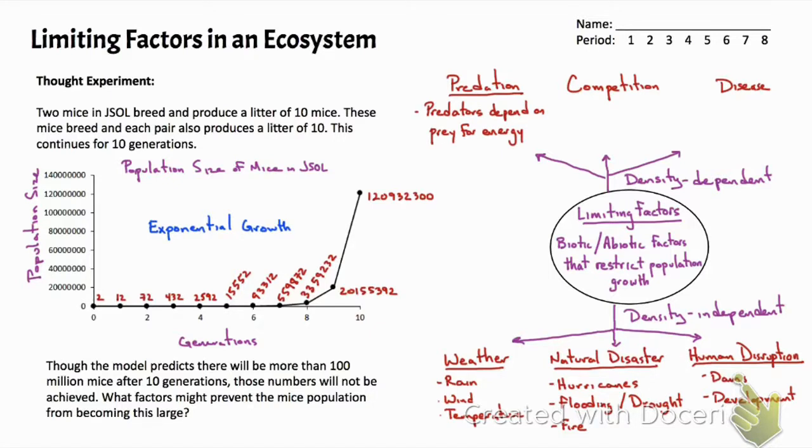In predation, predators depend on prey for energy. As the density of prey increases, we might find that the density of predators will increase as well. But with overeating from predators, we might see a decrease in prey size, which would then ultimately reduce predator size.